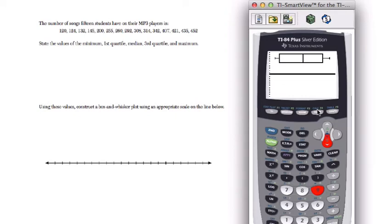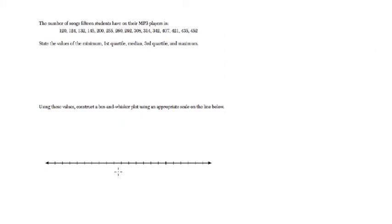Now here, this will highlight the key values for you. It'll save you so much time. The median is 292. It shows you that. Let's press the trace button to find that out. So 292 and 145 is the first quartile.